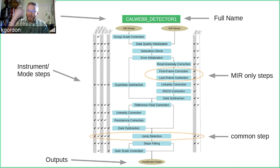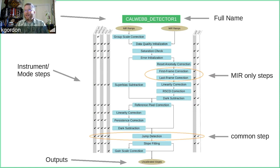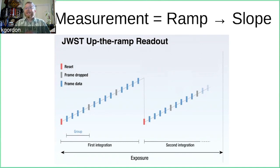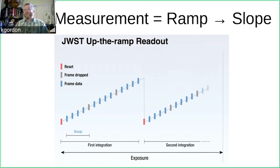A bit about JWST measurements: near and mid-infrared detectors aren't like CCDs. You can actually sense how many electrons are in each pixel without destroying them — a non-destructive read. You can do this at a regular cadence and build up a measurement as a function of time that goes up like a ramp. The ramp increases linearly as the rate at which you detect photons is generally constant, so the total number of photons increases, giving you that linear ramp.